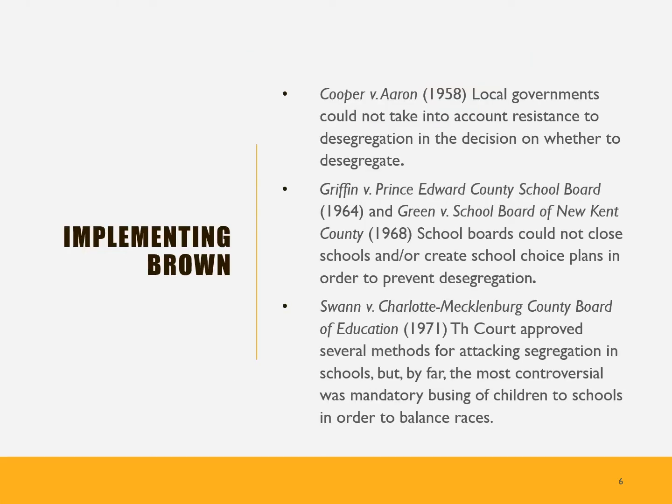So how was Brown implemented? We see here three major areas. First, in the 1958 case Cooper versus Aaron, it said that local governments couldn't take into account local resistance to desegregation. The desegregation was a requirement, and even if it wasn't politically popular, it still had to be done.